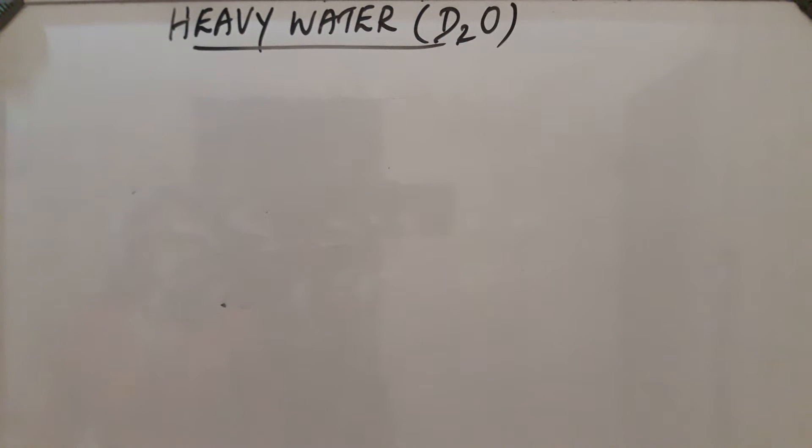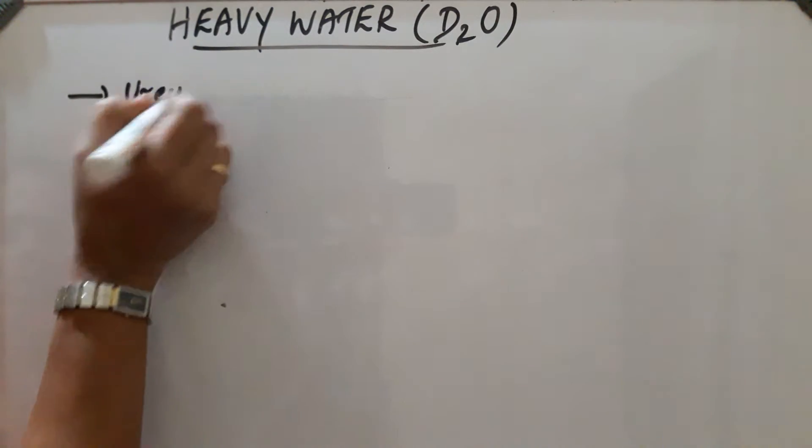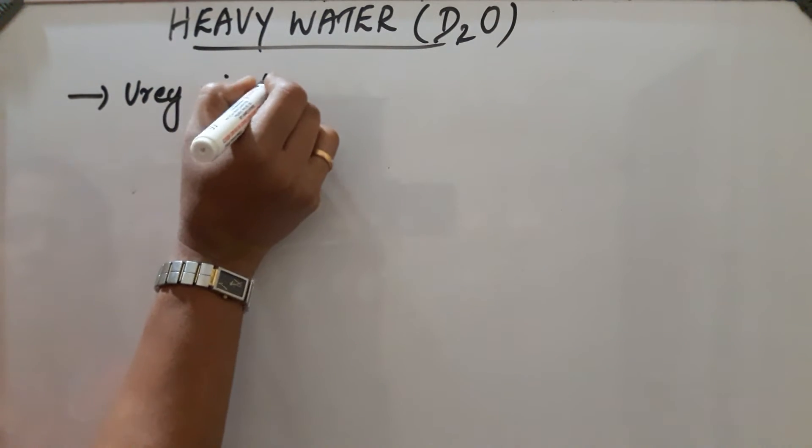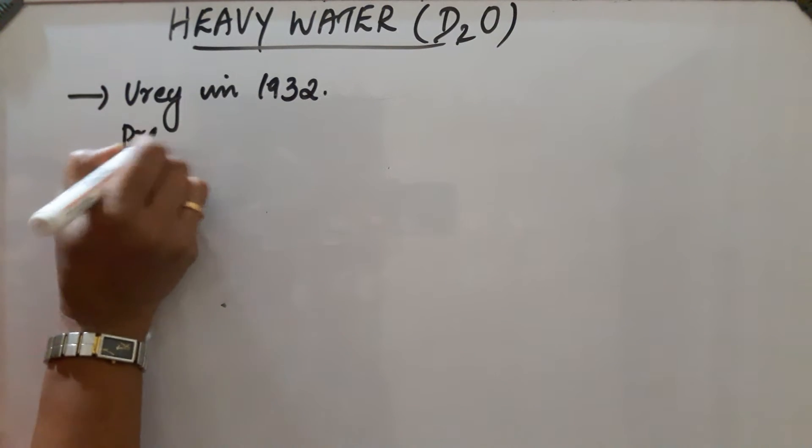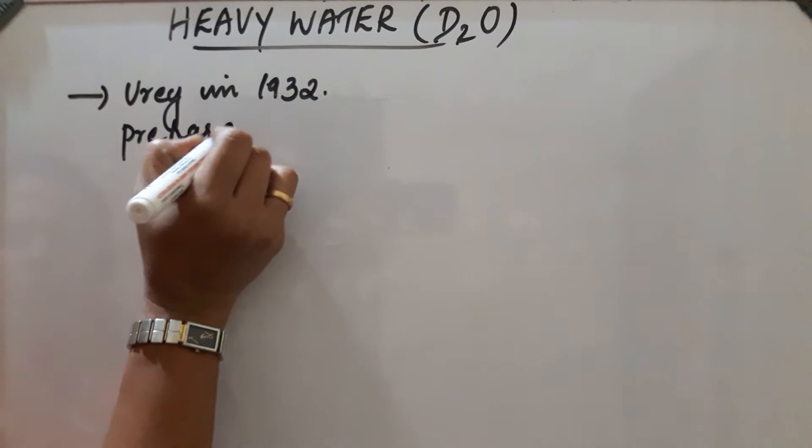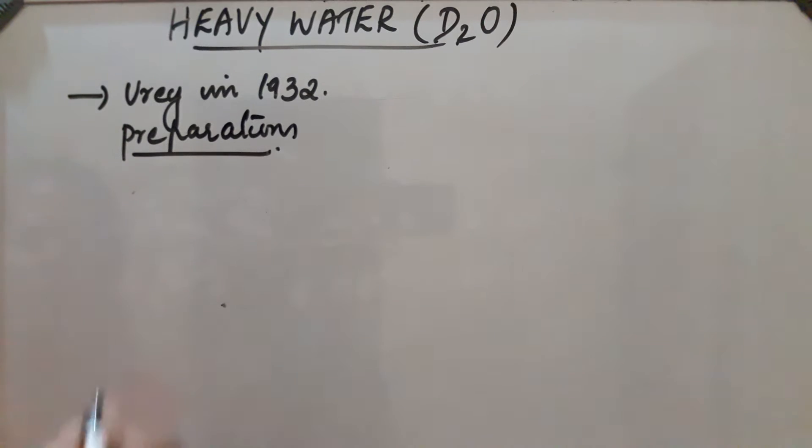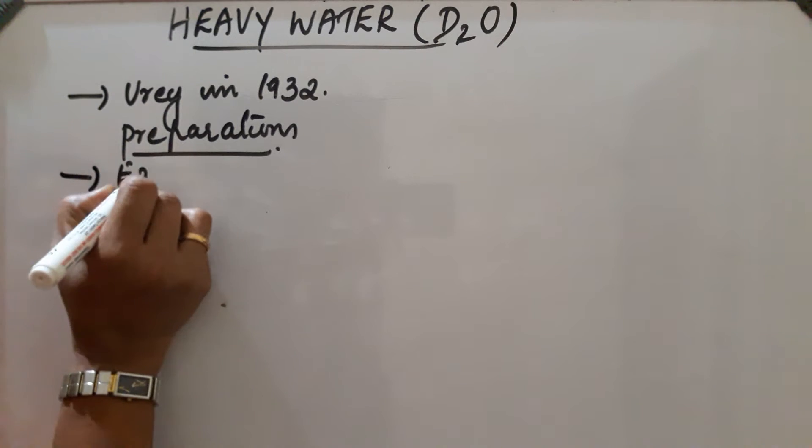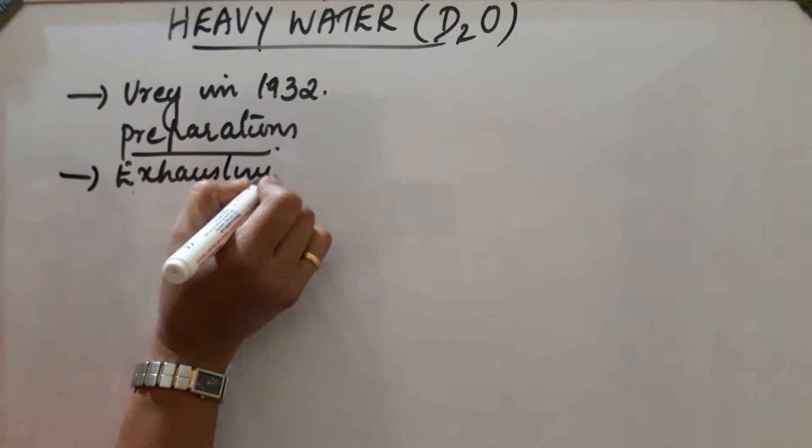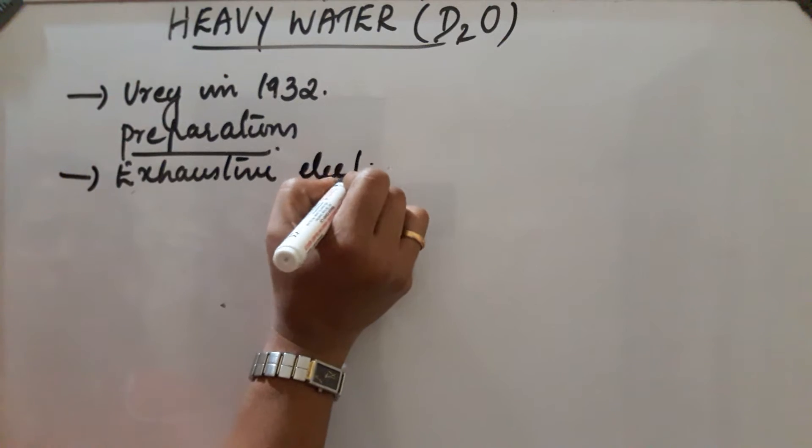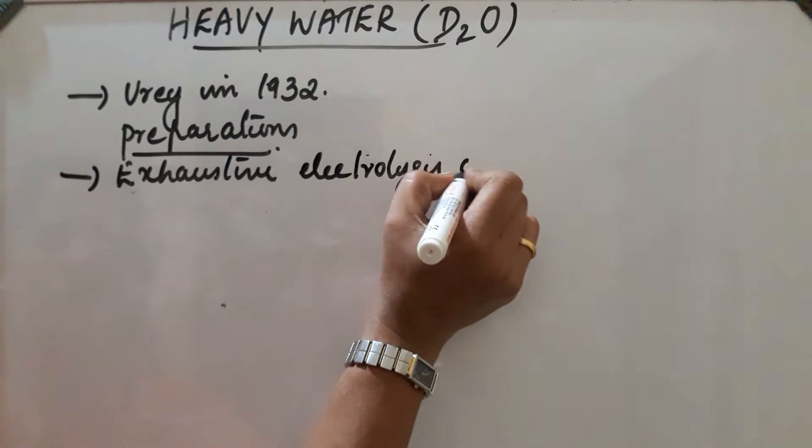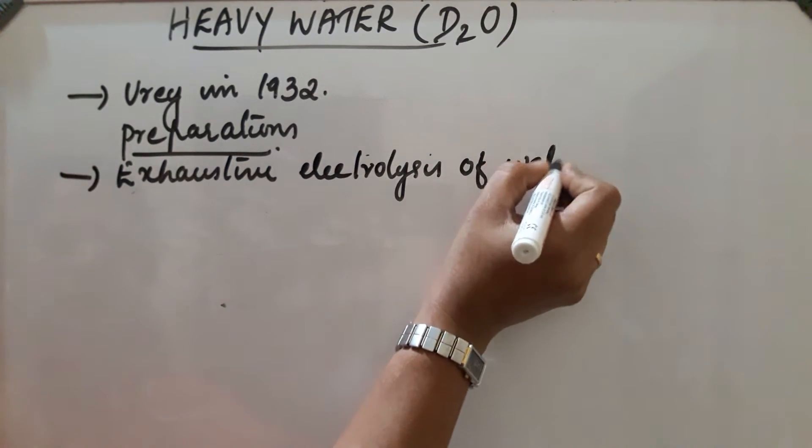Heavy water or D2O, deuterium oxide, was discovered by Urey in 1932. It is prepared by the exhaustive electrolysis of water.